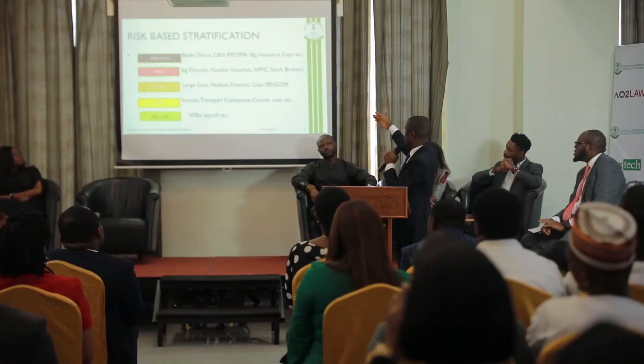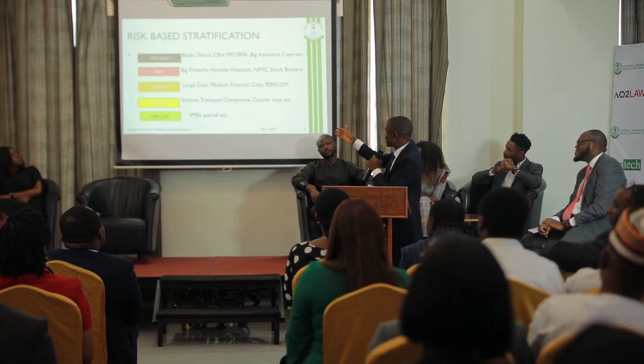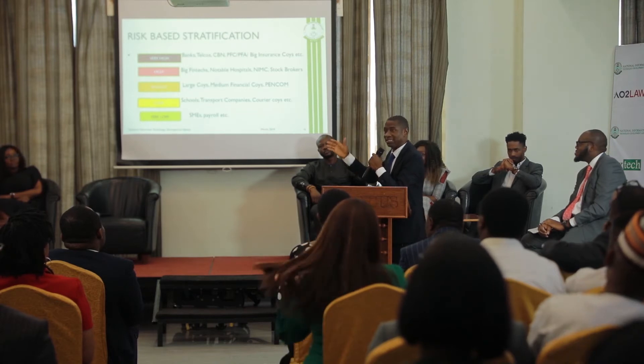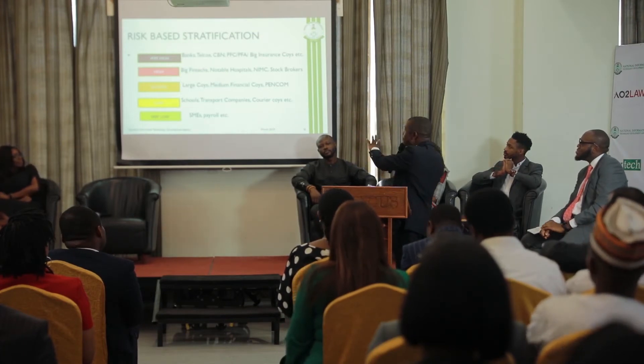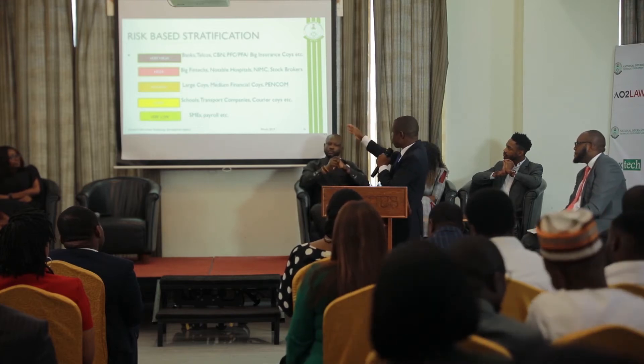The black color code goes to banks, telcos, CBN, PFCs, big insurance companies. Then red, which is bloody — it's big fintechs, notable hospitals. For example, if Reddington's data asset is breached, you can imagine. So notable hospitals, NIMC, stockbrokers — this is a very high risk category. Then average is large companies, medium financial, pension companies. Then low — schools, transport companies. Then very low is SMEs and payroll.